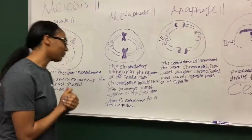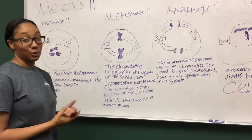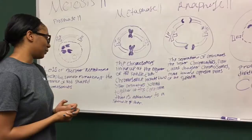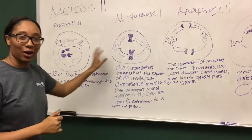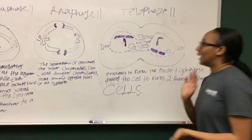And then we move to metaphase II. The chromosomes line up at the equator of the spindle. Each chromosome includes two sister chromatids joined together at the centromere, that is attached to a spindle fiber. So the friends start arguing a bit. They're still together, but they start arguing a bit.